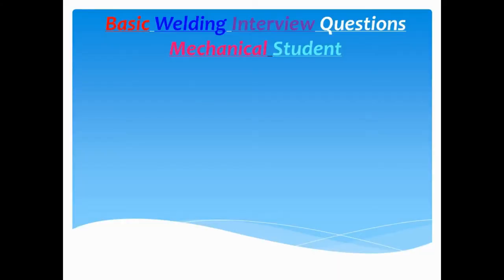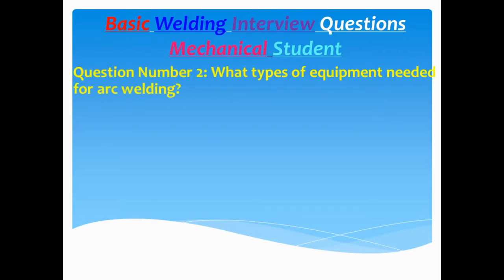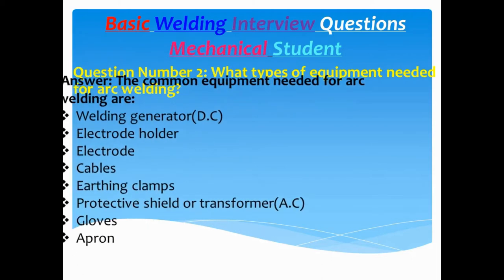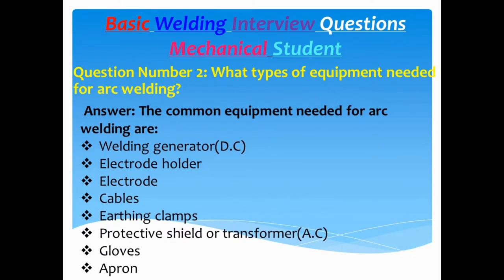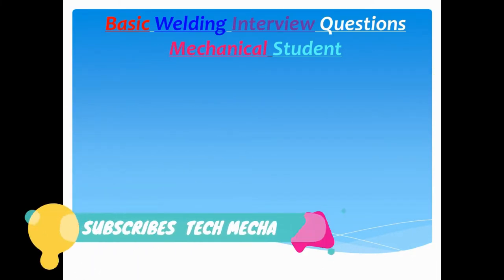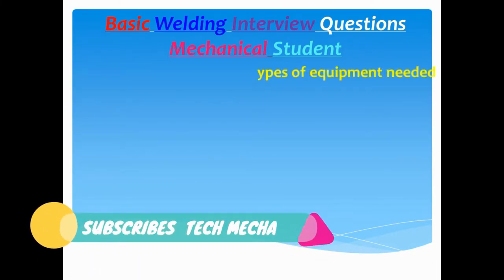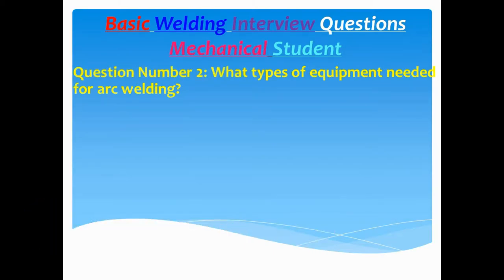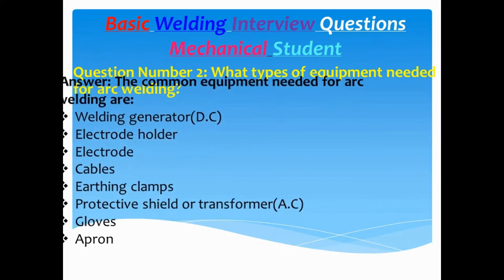Question number two: What types of equipment are needed for arc welding? Answer: Welding generator (DC), electrode holder, electrode cables, earthing clamps, protective shield or transformer (AC), gloves, apron, chipping hammer, wire brush.